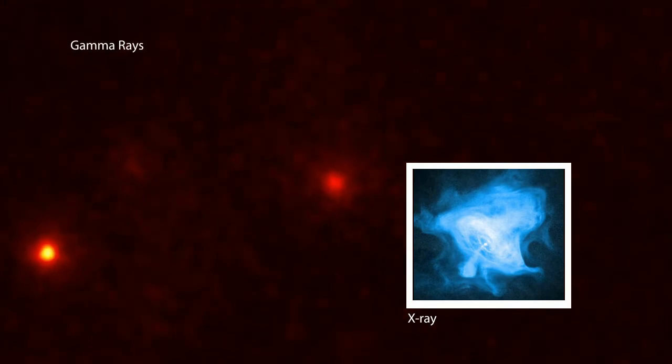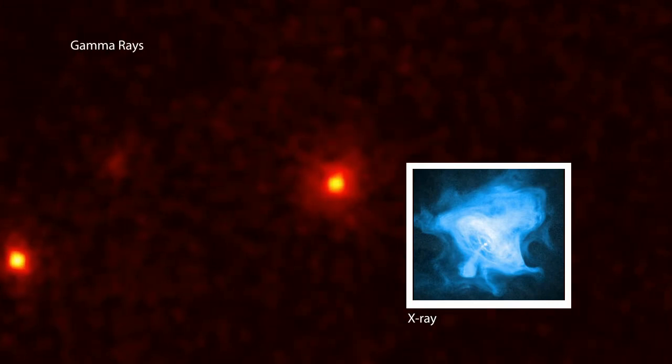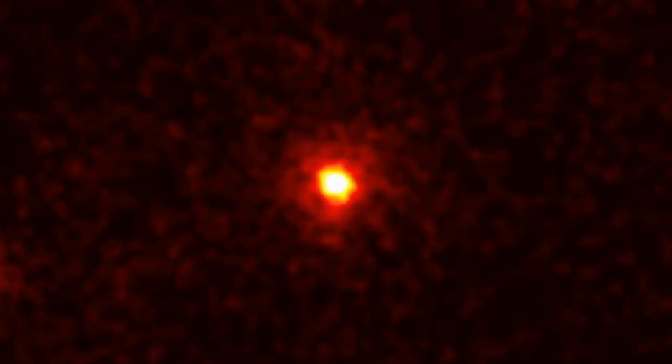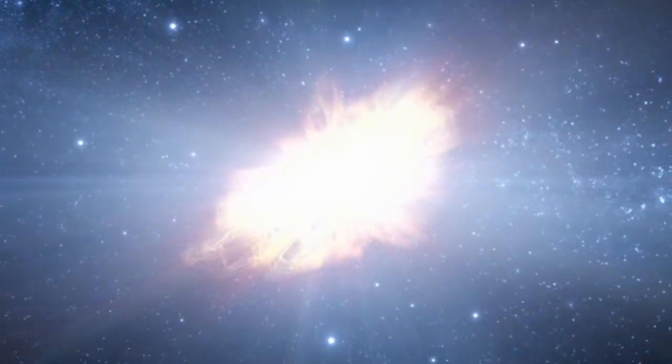The Chandra data provides strong constraints on the behavior, at relatively low energies, of the particles that have been accelerated to produce the gamma ray flares.